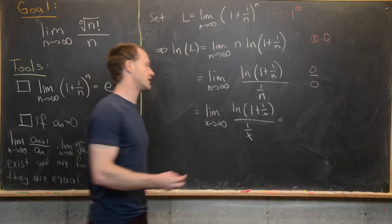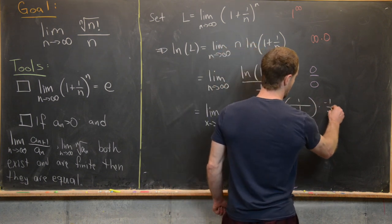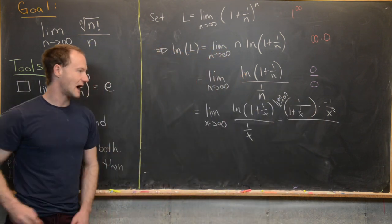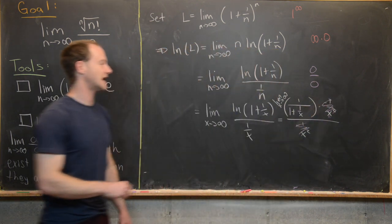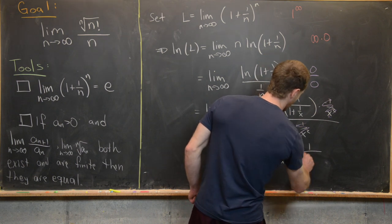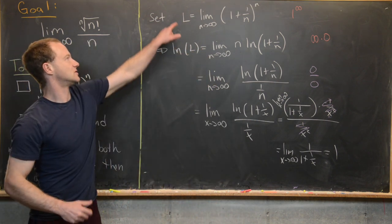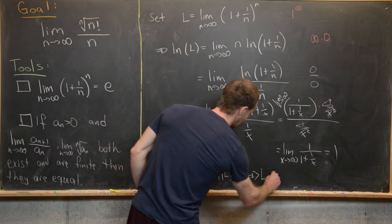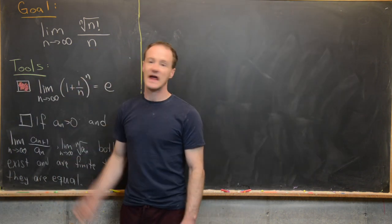Using L'Hôpital's rule, the derivative of the numerator is one over one plus one over x, times negative one over x squared. The derivative of the denominator is minus one over x squared. These minus one over x squared terms cancel, leaving the limit as x goes to infinity of one over one plus one over x, which equals one over one plus zero, which is one. But that equals the natural log of our goal limit, so ln(l) equals one, which means our goal limit equals e.